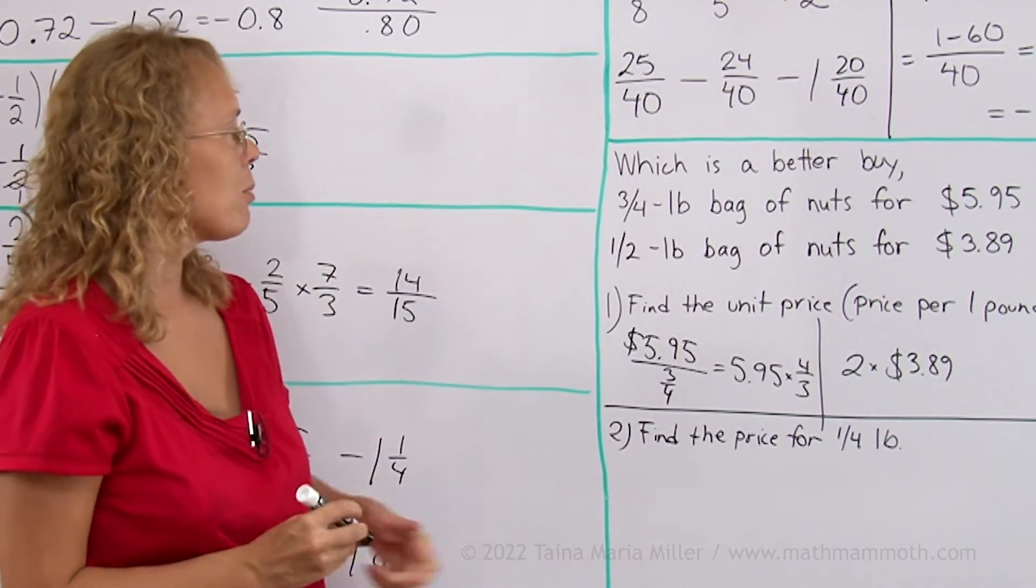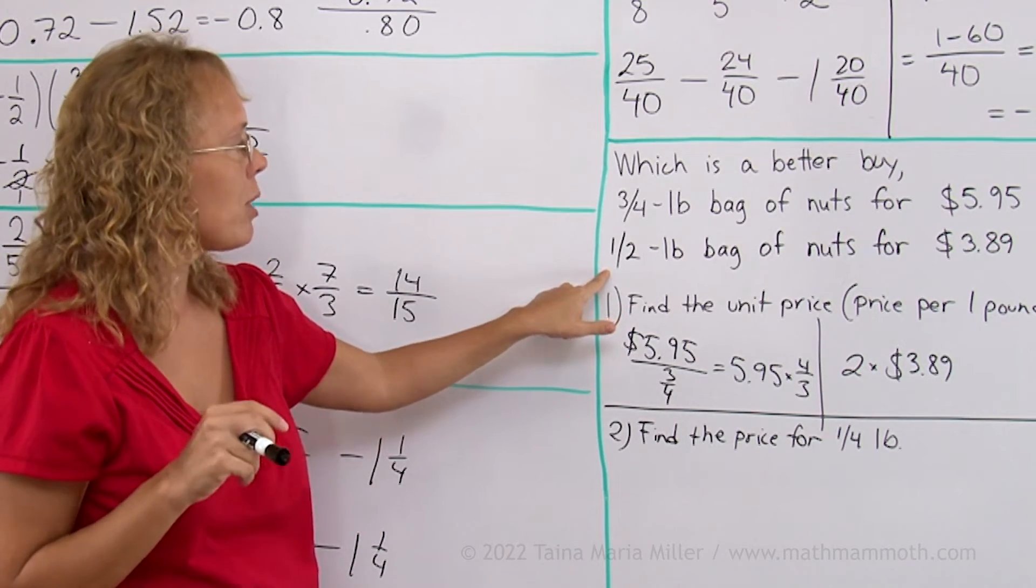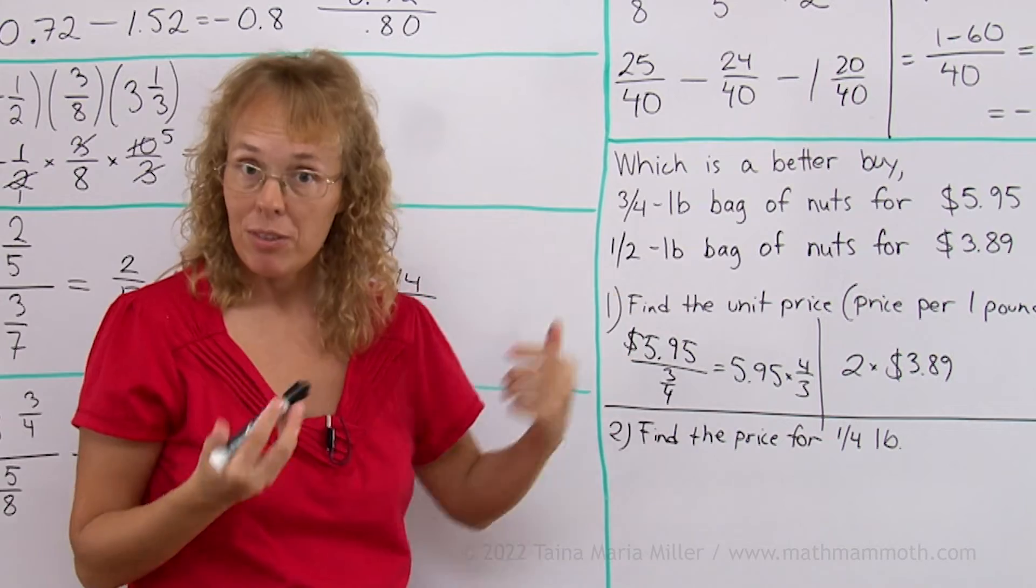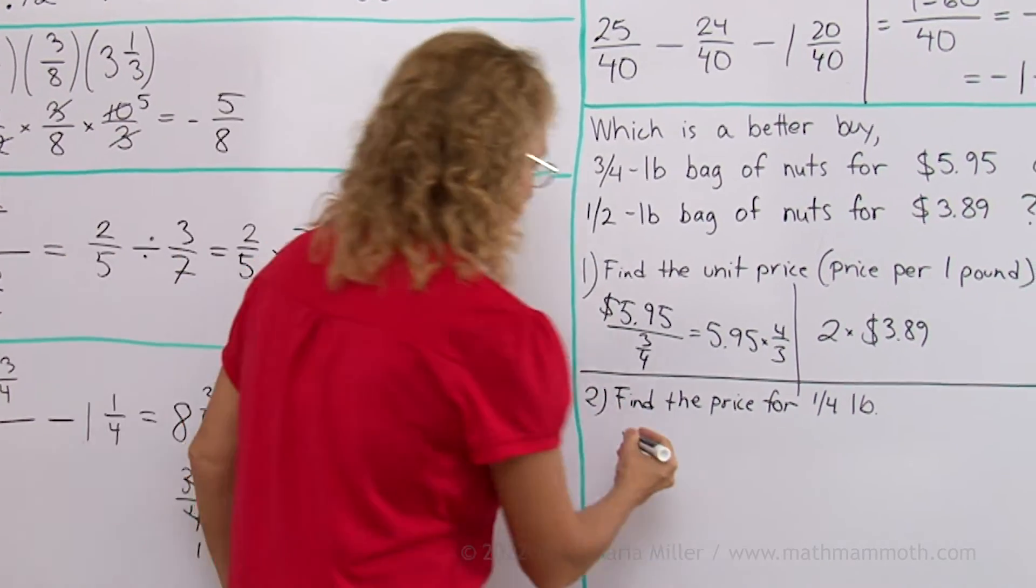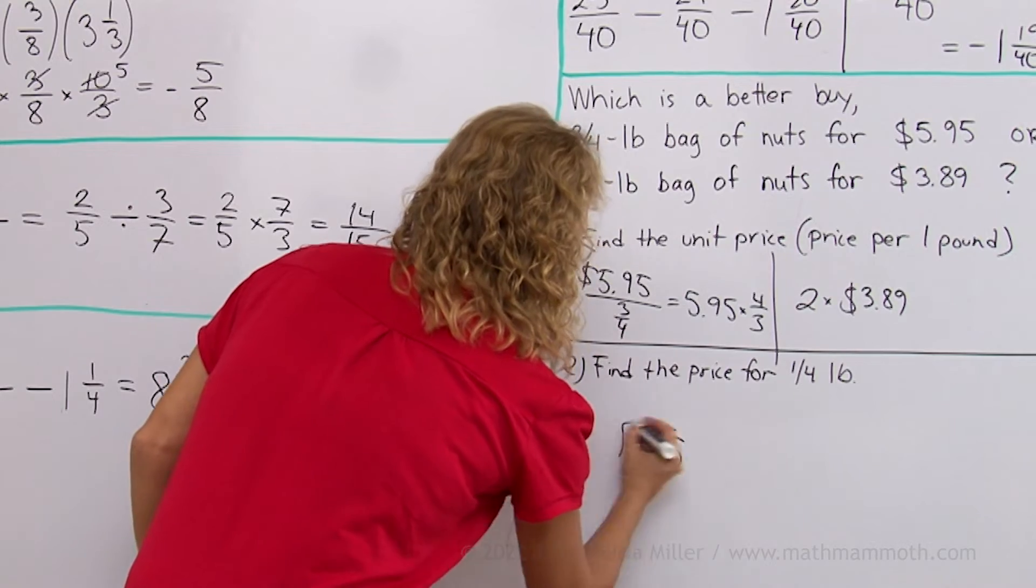Find the price per 1/4 of a pound. Because this here you can divide by 2 to get the price for 1/4 of a pound. And this here you can divide by 3. So let's do that. Maybe that is quicker. I think it is easier to think about anyway.